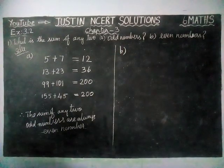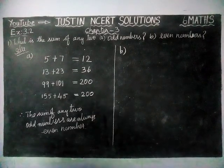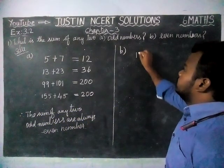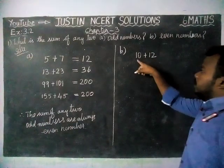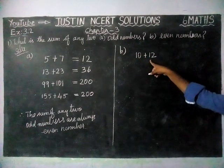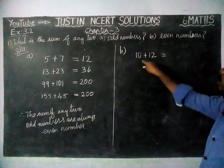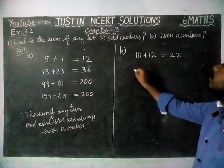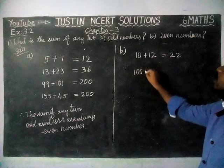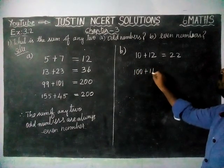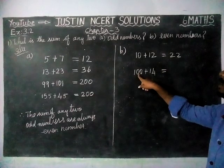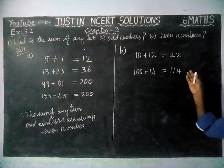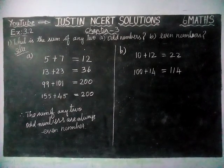Now we will take even numbers. We will take 10 plus 12. 10 is an even number, 12 is also an even number. 10 plus 12 is equal to 22, an even number. Next, 100 plus 14. 100 is an even number, 14 is an even number. When we add these two, we get 114. Again, we are getting an even number.